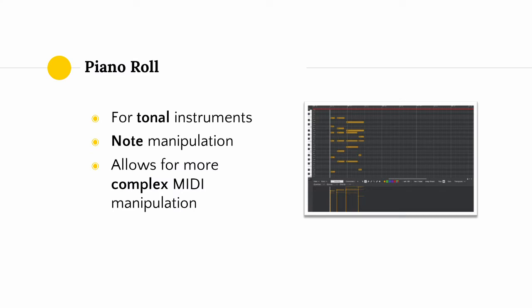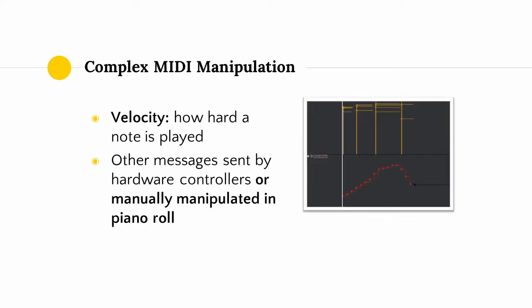Compared to the step sequencer, the piano roll is generally more sophisticated, allowing for more complex manipulation of MIDI data. MIDI data can convey more information than just what notes are being played and when. For example, MIDI messages can convey information about the velocity of notes — that is, how hard they are played.